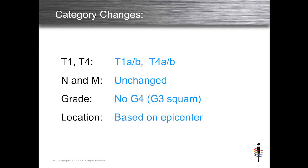The good news is that in terms of category changes, there are very few changes to adapt to from AJCC 7 to 8. T1A and B, which we've always been using, was finally incorporated into the staging system. T4A and B was incorporated to include peritoneum and pleura. There are no changes in N and M. Grade was simplified, and location was made to coalesce with what made sense in the clinic.